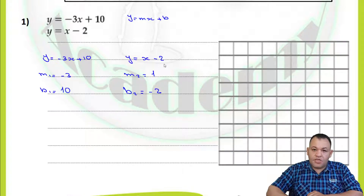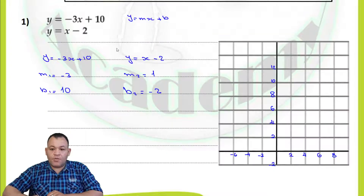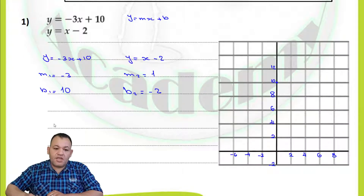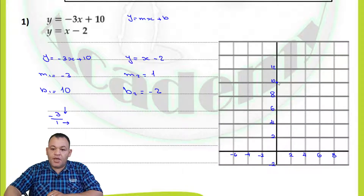Because y equals mx plus b, m is the coefficient of x and b is the constant term — the number with no x and no y. Now we can graph them. For the first line, we start from the y-intercept at 10. The slope of negative 3 means negative 3 over 1, so we go down 3 and right 1. Going 3 units down and 1 unit to the right, we can then draw line number 1.